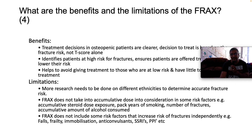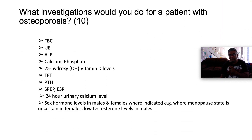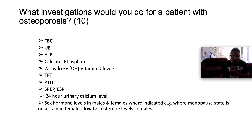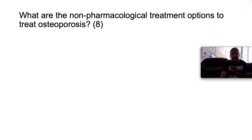What investigations would you do for someone with osteoporosis? Do a full blood count, chemistry panel, alkaline phosphatase, calcium, magnesium, phosphate, and 25-hydroxyvitamin D levels to determine if the patient is insufficient, insufficient, or replete. Also thyroid function tests, parathyroid hormone level, serum protein electrophoresis to hunt for myeloma or plasma cell dyscrasia, ESR, 24-hour urinary calcium, and consider sex hormone levels in males and females.